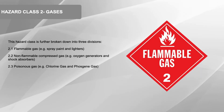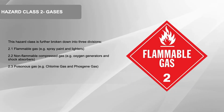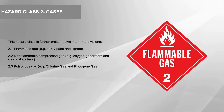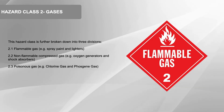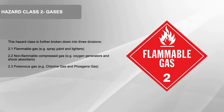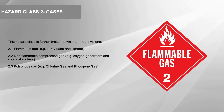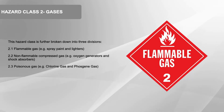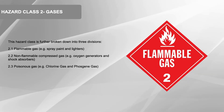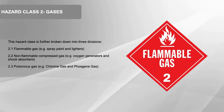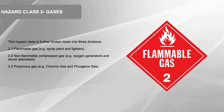Hazard Class 2: Gases. This hazard class is further broken down into three divisions. 2.1 Flammable Gas — Example: Spray Paint and Lighters. 2.2 Non-Flammable Compressed Gas — Example: Oxygen Generators and Shock Absorbers. 2.3 Poisonous Gas — Example: Chlorine Gas and Phosgene Gas.